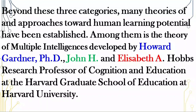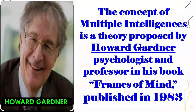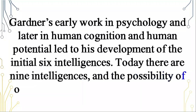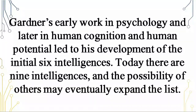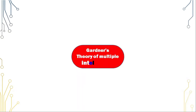Howard Gardner is a research professor of cognition and education at the Harvard Graduate School of Education. The concept of multiple intelligences is a theory proposed by Howard Gardner, psychologist and professor, in his book Frames of Mind, published in 1983. Gardner's early work in psychology and later in human cognition and human potential led to his development of the initial six intelligences. Today there are nine intelligences, and the possibility of others may eventually expand the list. Howard Gardner defines multiple intelligences as a bio-psychological potential to process information that can be activated.